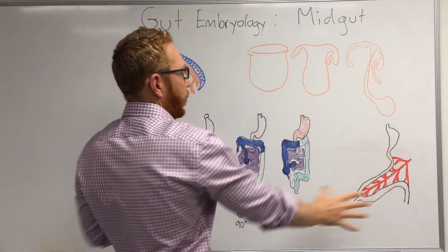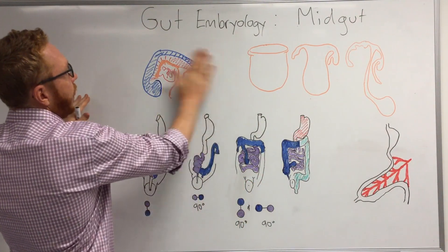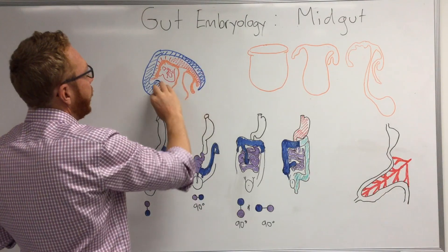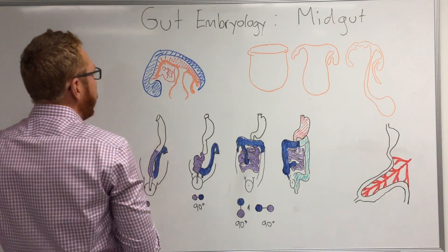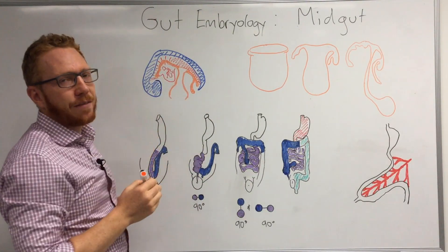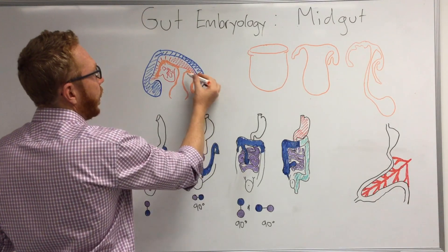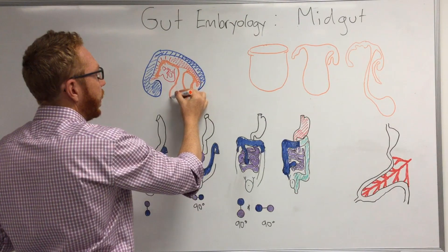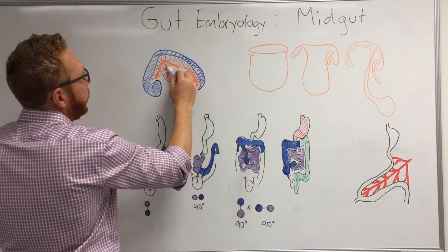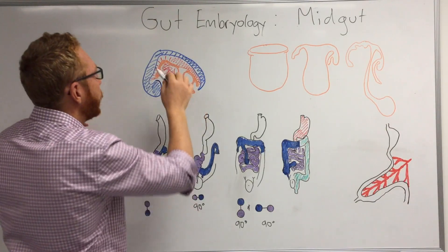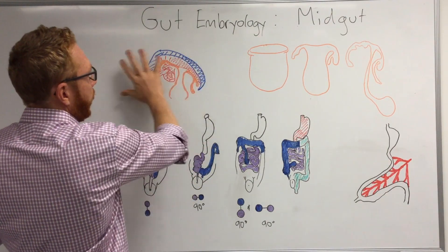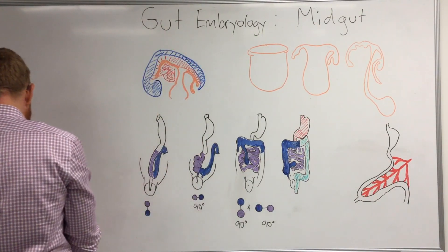Looking at the mid-sagittal image on the board: in blue we have the developing central nervous system — head here, tail here. In orange we have the developing gut. At the front end is the foregut, which we covered last lecture, and at the back is the hindgut. The section we're focused on today is the mid-gut. Behind the gut in red are the developing heart anteriorly and mesodermal structures posteriorly, including the dorsal mesentery. This is how it looks at about four to five weeks — the starting point for today's lecture.